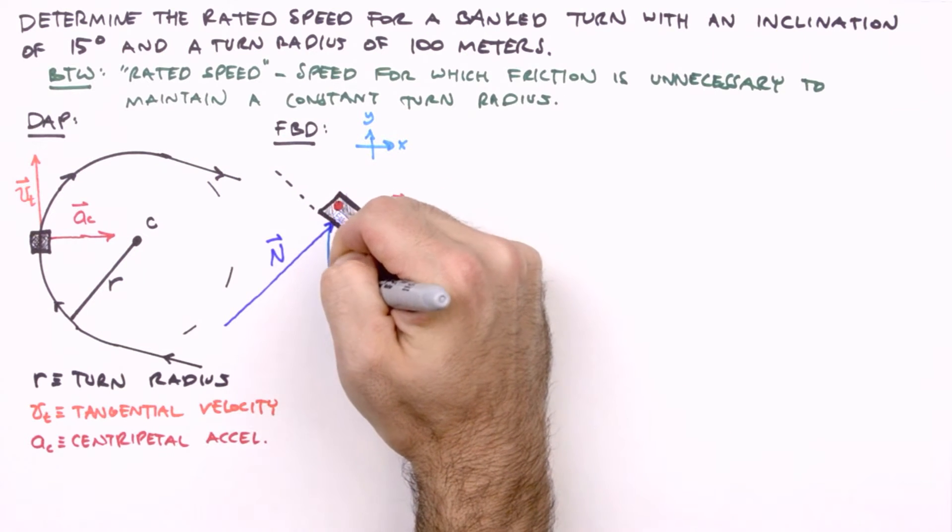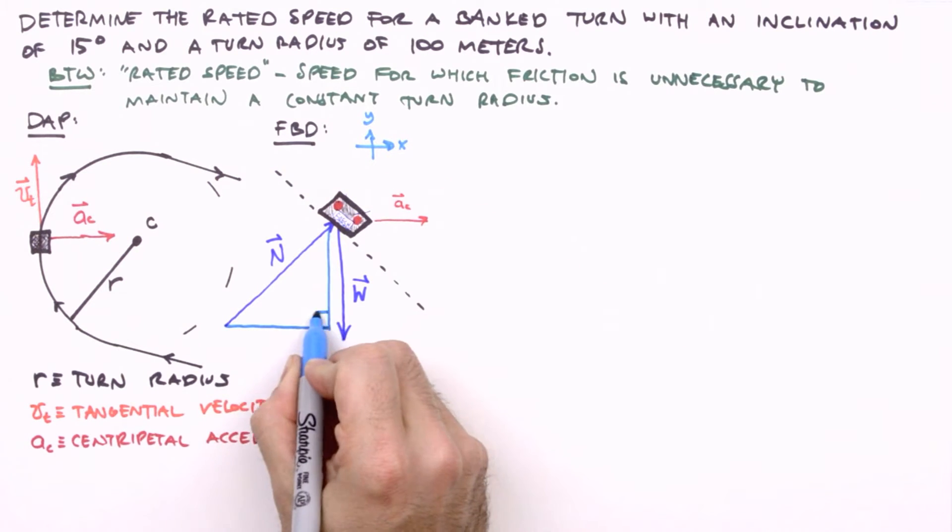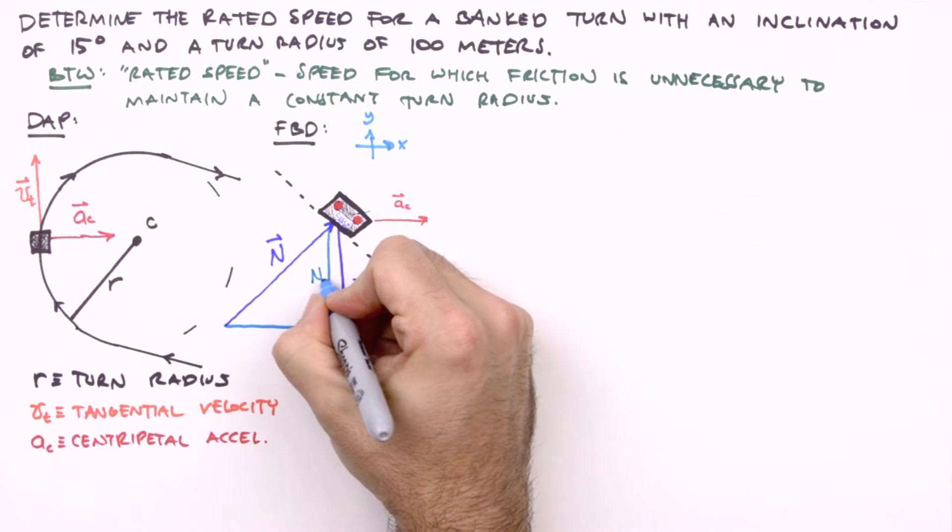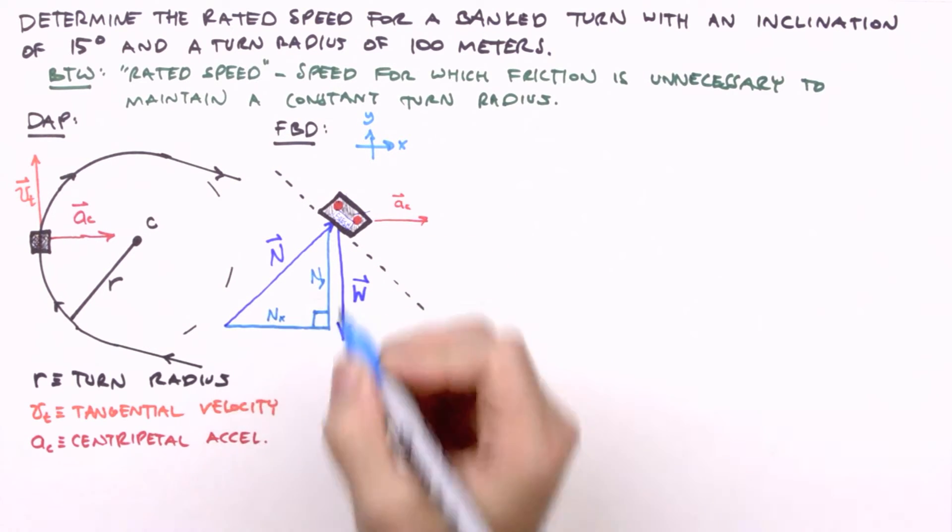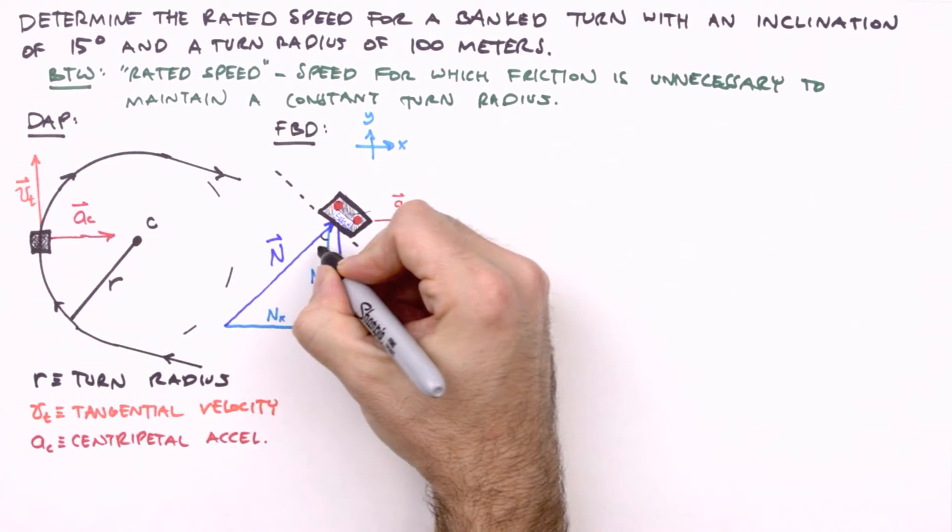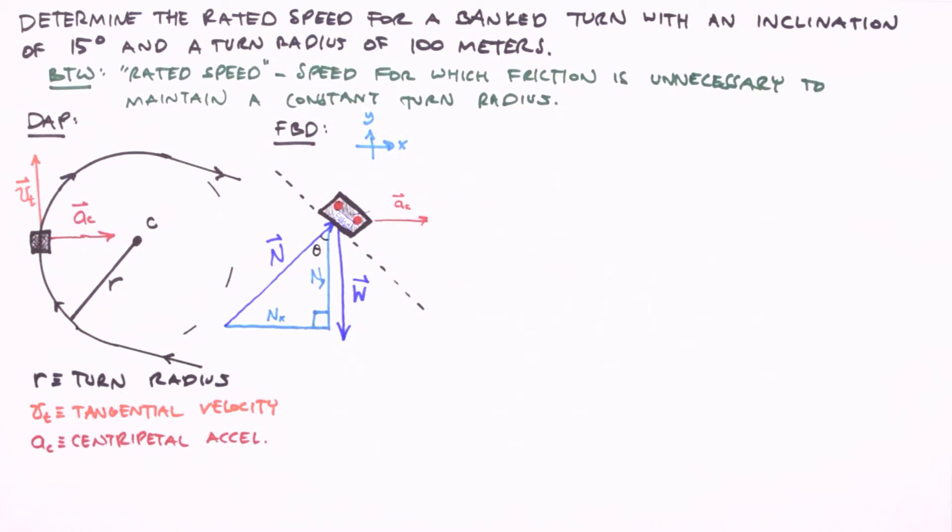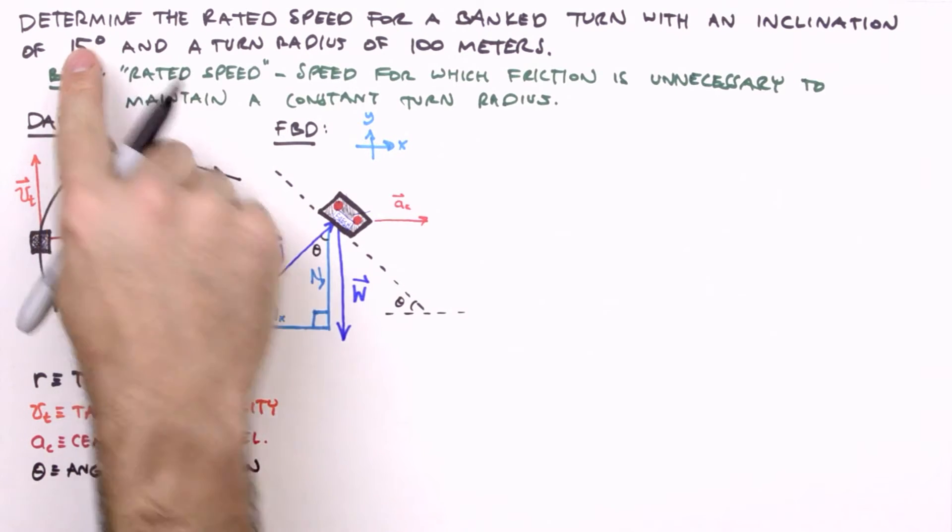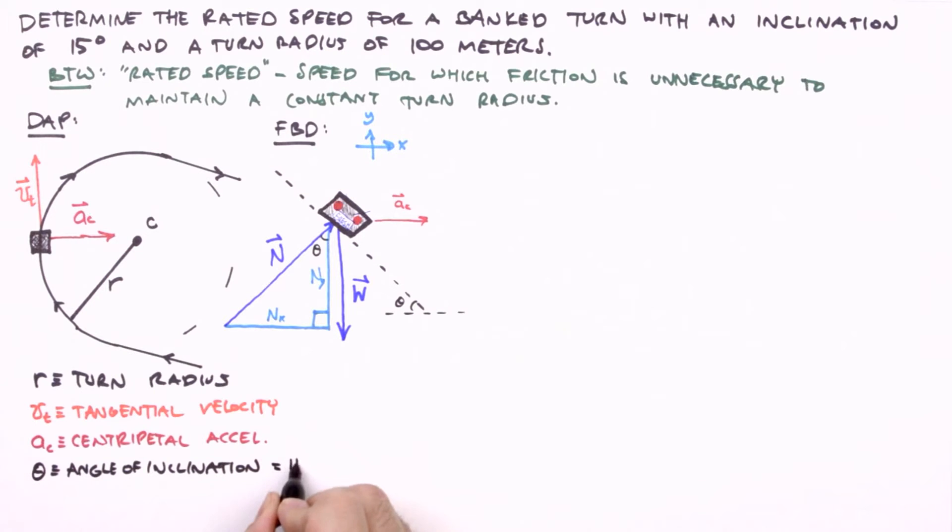So here's the y component of the normal force, and the x component of the normal force. We'll call this angle theta. And it turns out that the angle between the normal force and the weight vectors is equal to the angle of the incline. So we'll label this theta as well. So theta is defined as the angle of inclination, which is a known value. So we write equals 15 degrees.